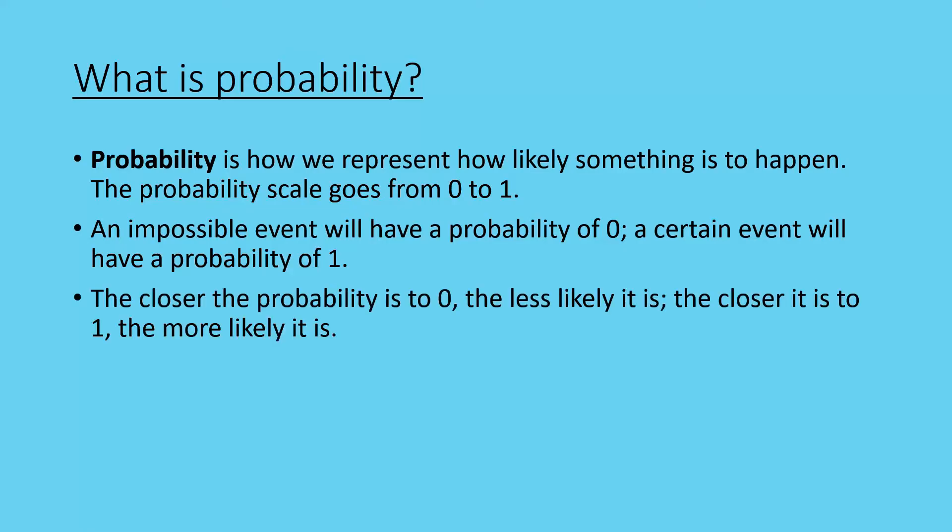The closer the probability is to 0, the less likely it is. And the closer it is to 1, the more likely it is. Sometimes you will see a little scale like this, trying to represent how likely something is.